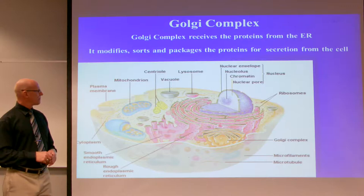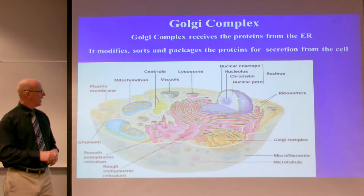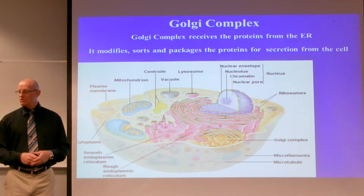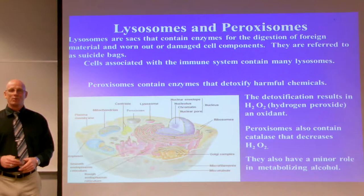The Golgi complex: the messenger RNA comes out of the nucleus pores and goes into the ER, where proteins are processed. They're then sent out into the Golgi complex. The Golgi complex receives the proteins from the ER — it's kind of like a packaging plant. It sorts them out, modifies them, and packages the proteins for secretion out of the cell for use by the body.